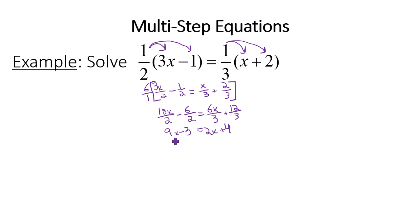There are no like terms on the left side and no like terms on the right side. So now we need to get the variable terms on one side and everything else on the other. I have x's on both sides, so I'll subtract 2x from both sides, giving me 7x minus 3 equals 4.